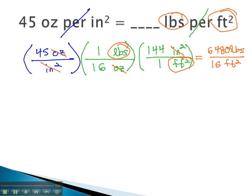6,480 pounds over 16 square feet. Dividing by 16 on our calculator, we find we have 405 pounds per square foot of pressure, is equal to the 45 ounces per square inch. With dual units, per is the fraction bar, and we can convert one at a time.